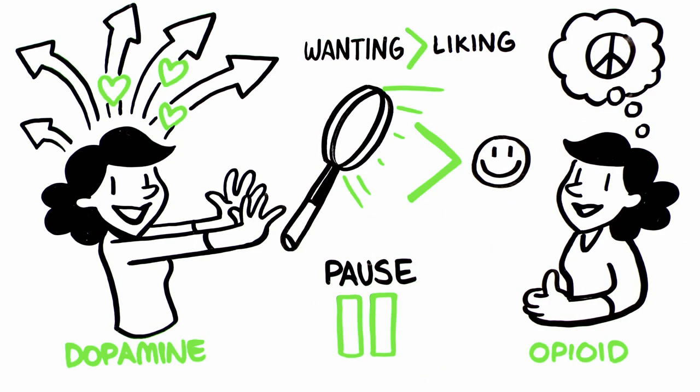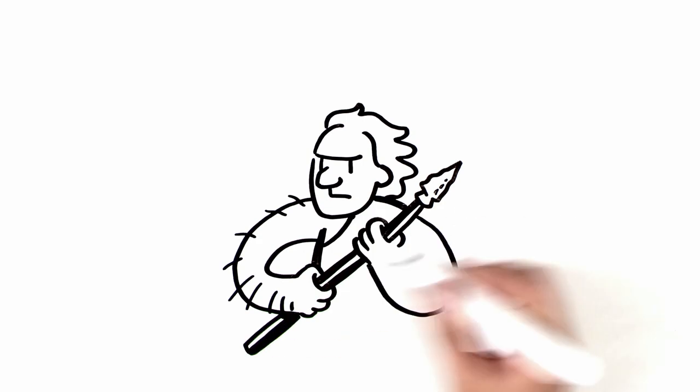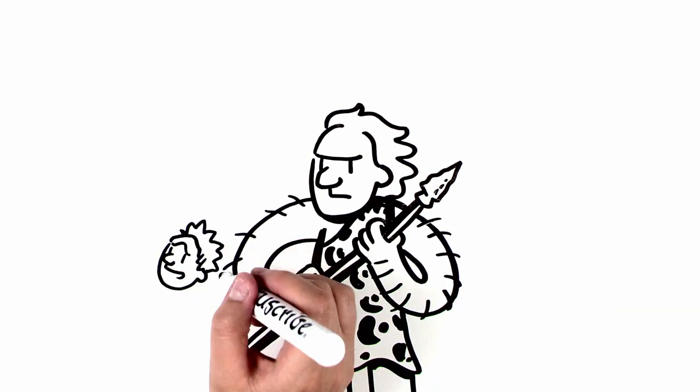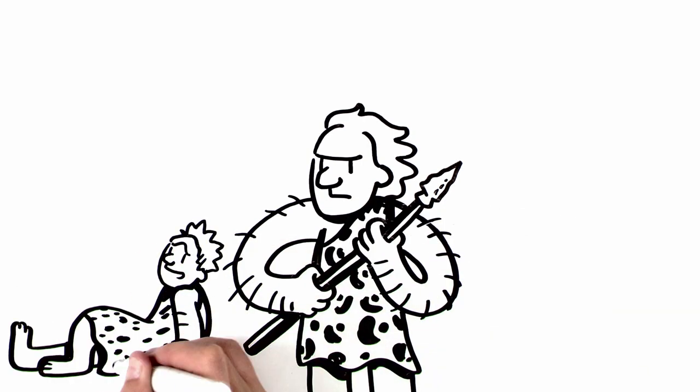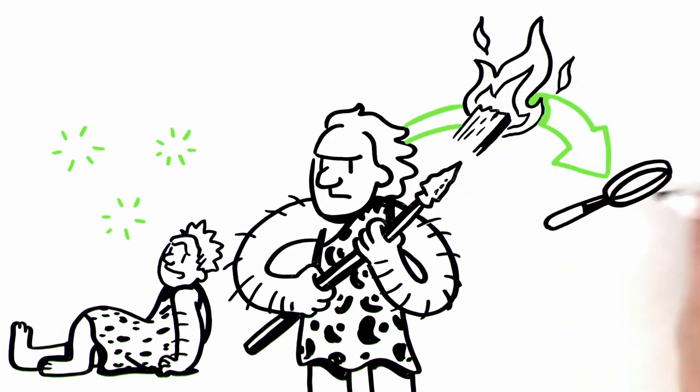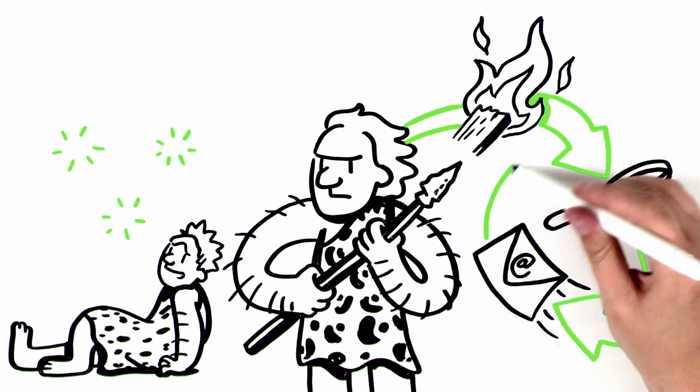Think evolutionary advantage. Seeking is more likely to keep us alive than sitting around in a satisfied stupor. Dopamine induces a loop. It starts us seeking, then we get rewarded for the seeking, which makes us seek more.